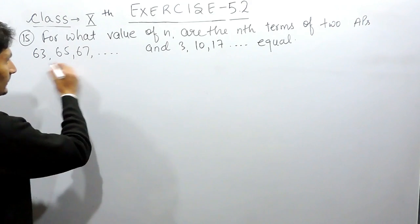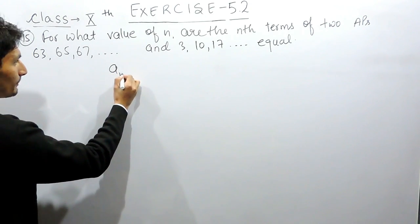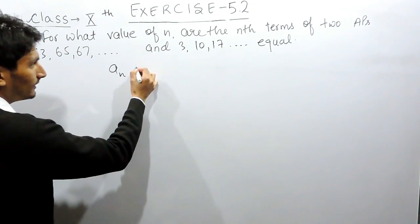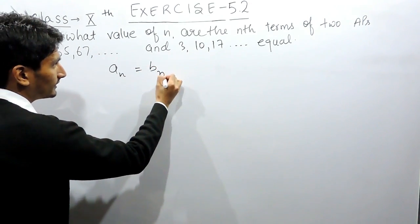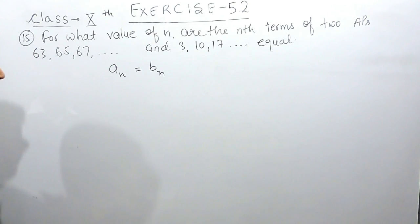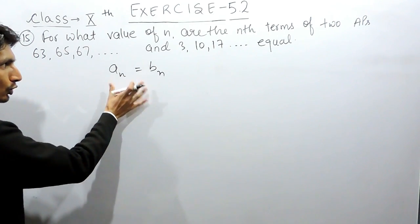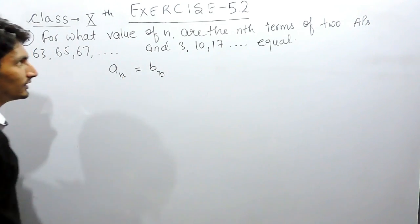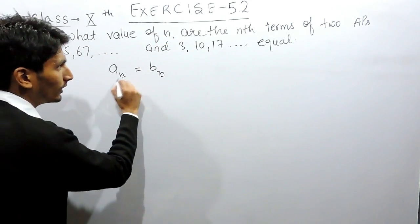So suppose that the nth term of this AP and the nth term of this second AP, supposing the nth term of this is Bn, are equal. So you have to find for what value of n these two terms are equal.